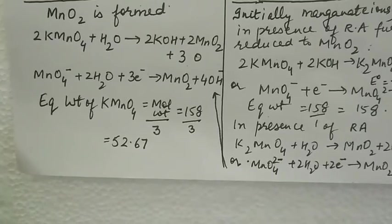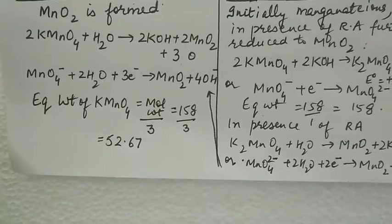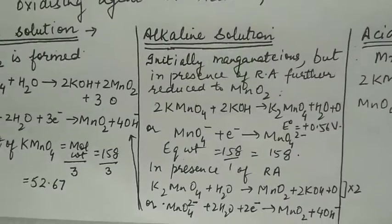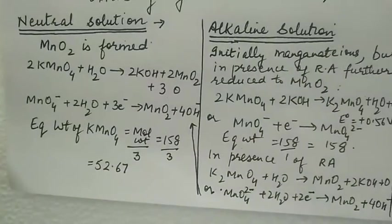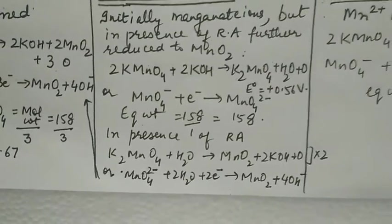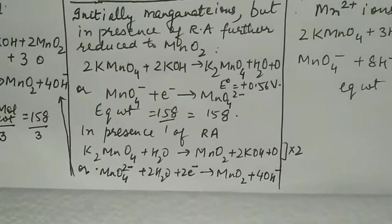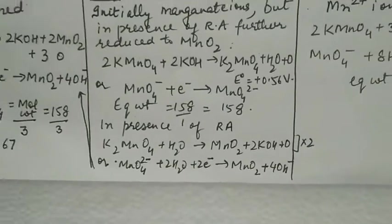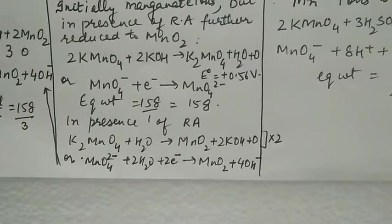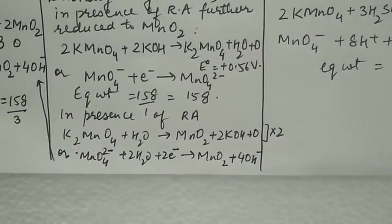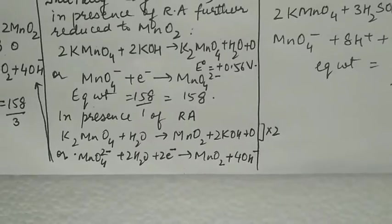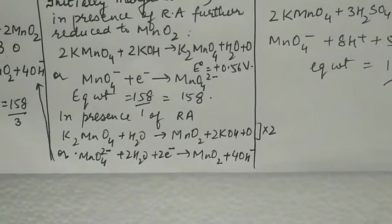Equivalent weight will be molecular weight divided by number of electrons taken, which is three, giving 52.67. In strongly alkaline solutions initially, potassium permanganate ions become manganate ions. But if reducing agent is also present, these manganate ions will further reduce. First, when manganate ions form, the reaction is potassium permanganate plus potassium hydroxide forms potassium manganate plus water plus nascent oxygen. Only one oxygen is produced.